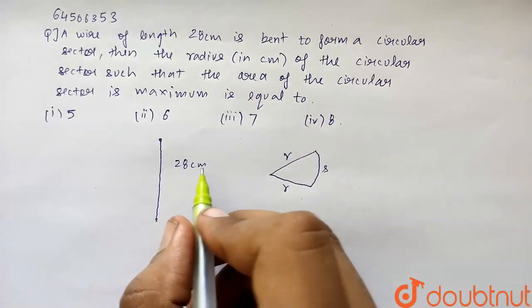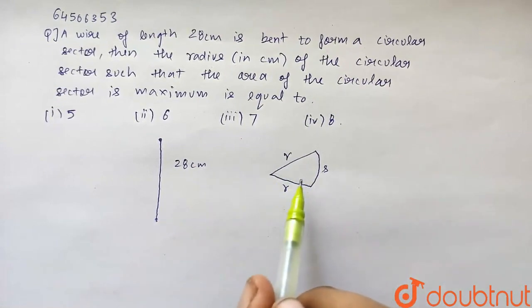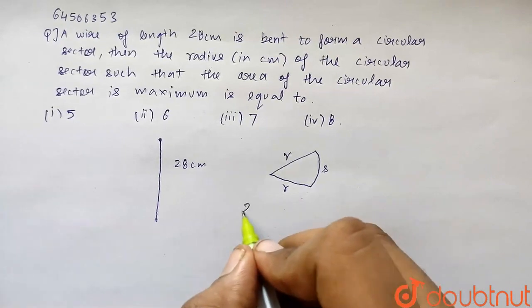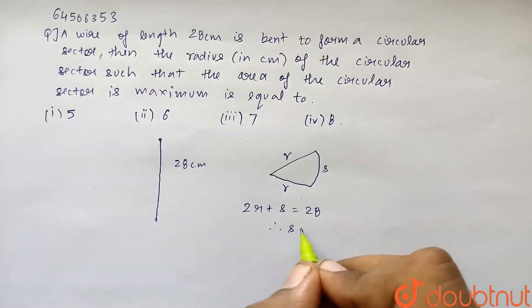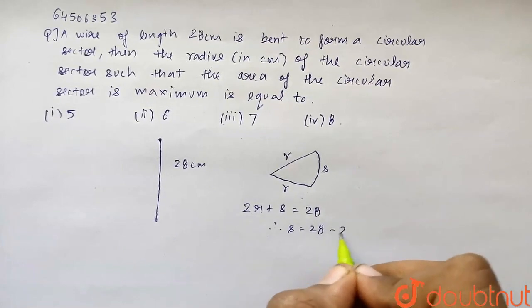So now this is 28 cm. And now the perimeter should be the same as the length of the wire obviously. So therefore it would be 2R plus S is equals to 28 cm. So therefore we can write S is equals to 28 minus 2R.